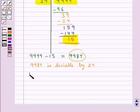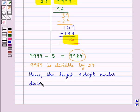Hence, the largest 4-digit number divisible by 24 is 9984.